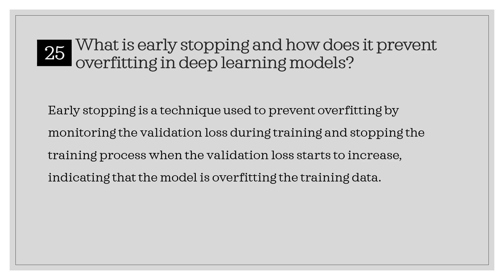What is early stopping and how does it prevent overfitting in deep learning models? Early stopping is a technique used to prevent overfitting by monitoring the validation loss during training and stopping the training process when the validation loss starts to increase, indicating that the model is overfitting the training data.